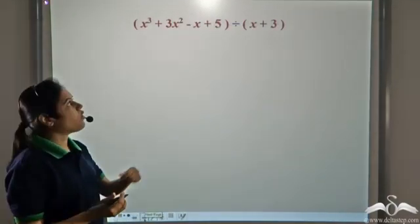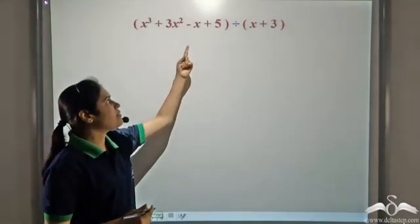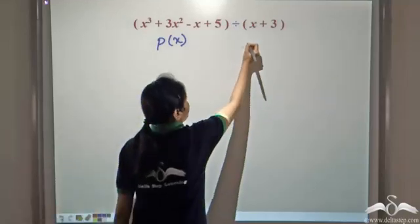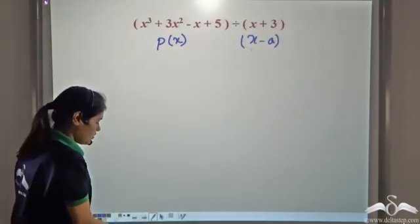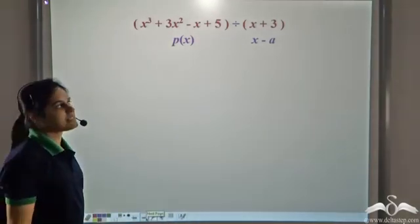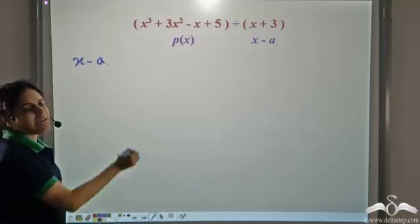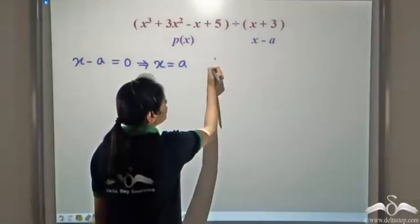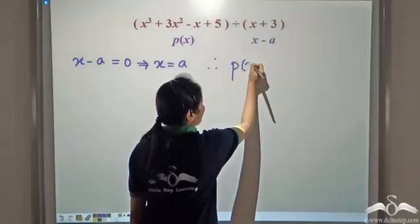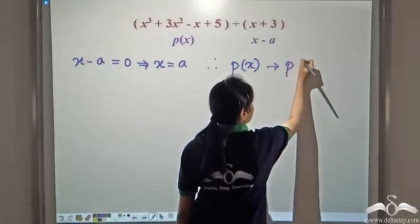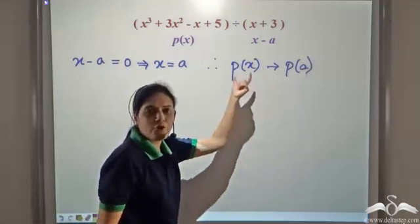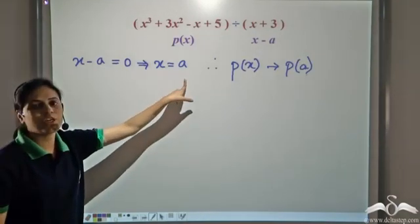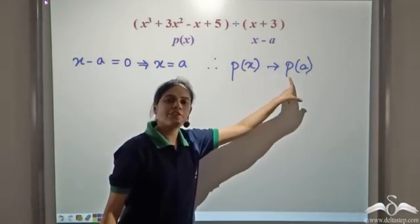Can you find the remainder when x cubed plus 3x squared minus x plus 5 is divided by x plus 3? When P(x) is divided by x minus a, we put x minus a equal to zero to get x equal to a. So to calculate the remainder, we evaluate P(x) at that value. Here the divisor is x plus 3, so we put x plus 3 equal to zero, giving x equal to negative 3. We then calculate P(negative 3) to get the remainder.